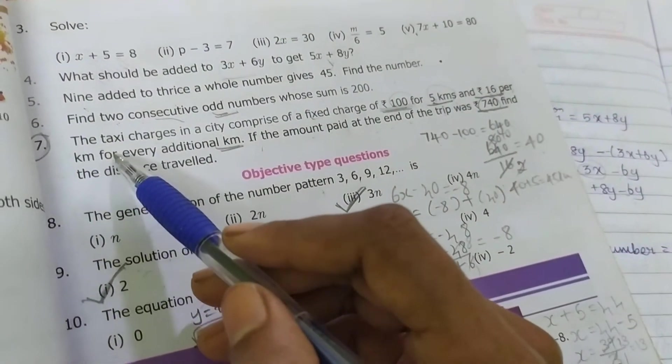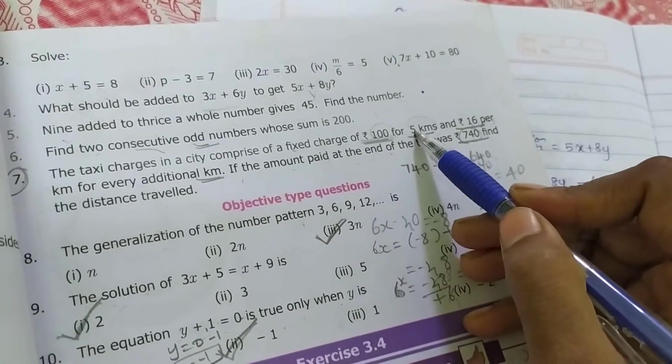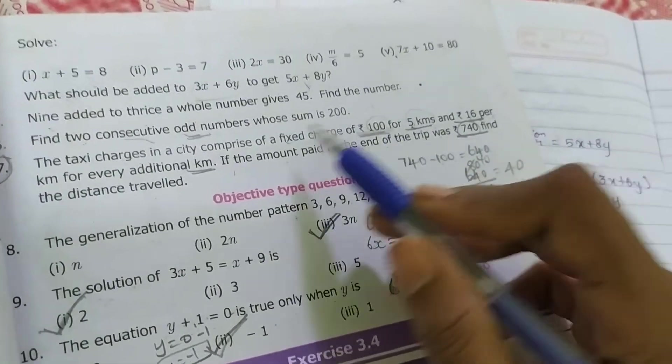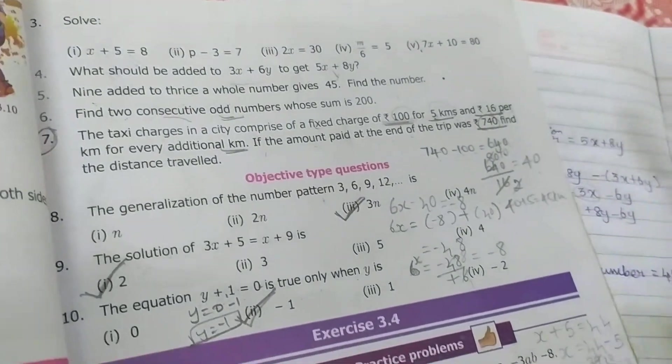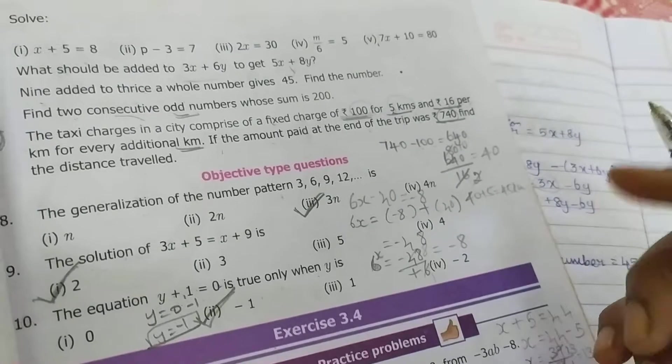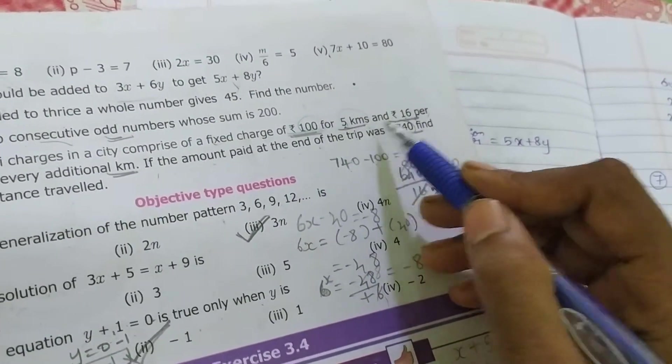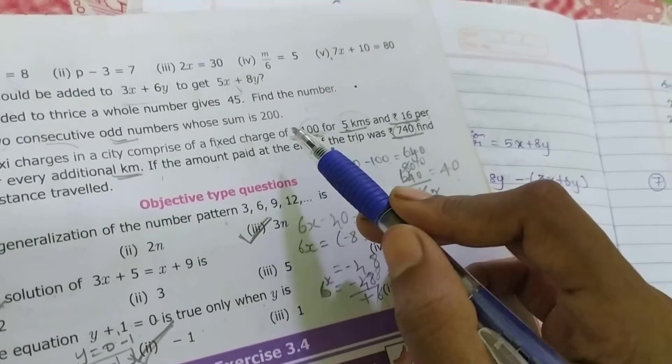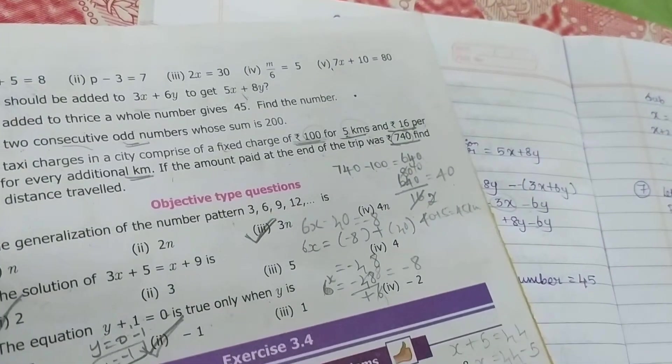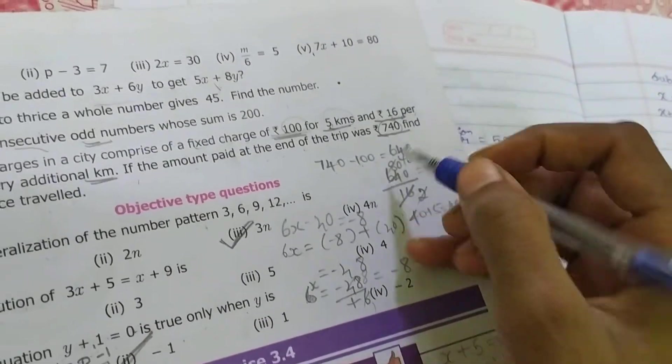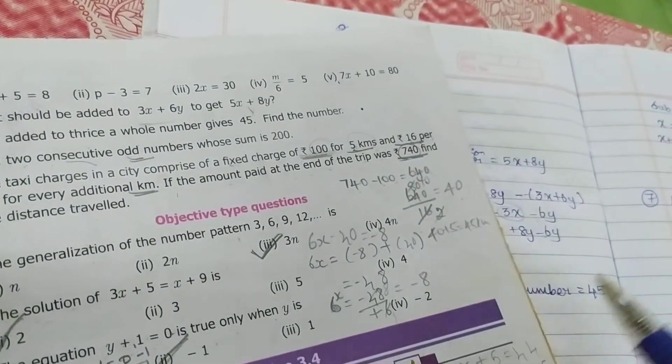In this problem, taxi charge in a city comprises of a fixed charge of rupees 100 for 5 kilometers. First 5 kilometers, 100 rupees they charge. Then 16 per kilometer. Additionally, after the 6 kilometers, 7, 8 - later kilometers they are traveling, each kilometer they are charging 16 rupees. So first 5 kilometers, I already mentioned 100 rupees, the fixed charge. The next 2 kilometers onward, 6th kilometers, 7th kilometers, the price will be increased. If the amount paid at the end of the trip was given, they are asking what is my distance traveled?